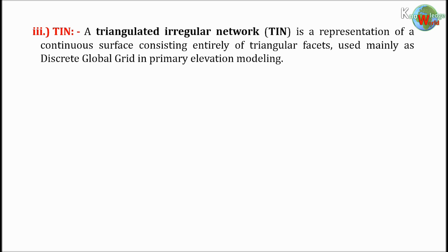A triangulated irregular network (TIN) is a representation of a continuous surface consisting entirely of triangular facets, used mainly as a discrete global grid in primary elevation modeling.